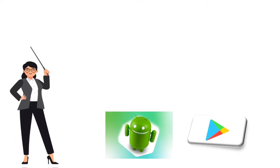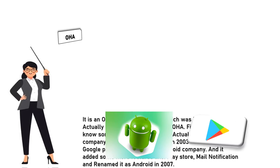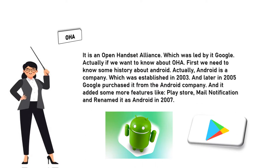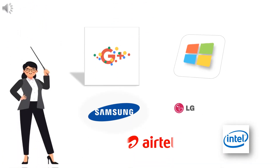8. OHA — It is an Open Handset Alliance, which was led by Google. To know about OHA, we need to know some history about Android. Android was a company established in 2003, and later in 2005, Google purchased it and added some more features like Play Store and mail notification, and renamed it as Android in 2007. OHA represents collaboration between software companies like Google and Microsoft, handset manufacturers like Samsung and LG, mobile operators like Airtel and Vodafone, and semiconductor companies like Intel.